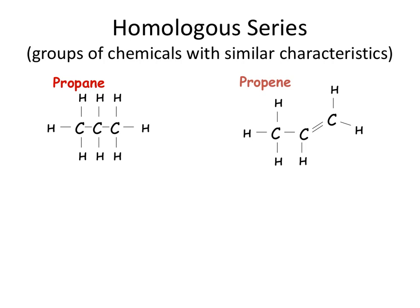So what do we mean by a homologous series? We are talking about a group of chemicals with similar physical and chemical characteristics. You have come across two groups already when you looked at Edexcel C1: these being alkanes, for example propane, a three carbon alkane, and the alkenes, those with the double bond, for example propene, which is a three carbon alkene.